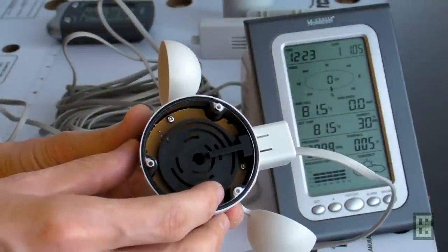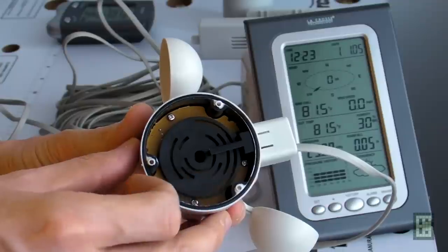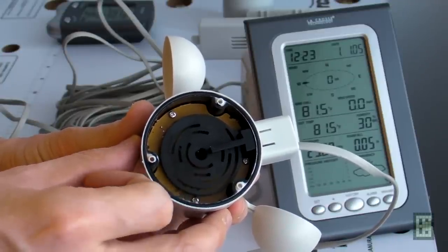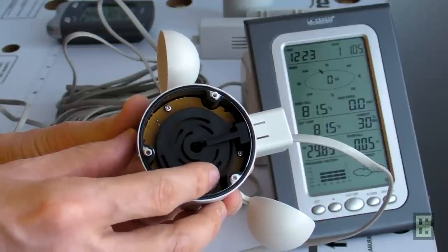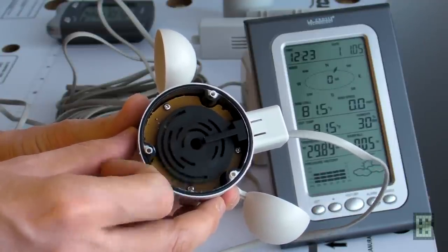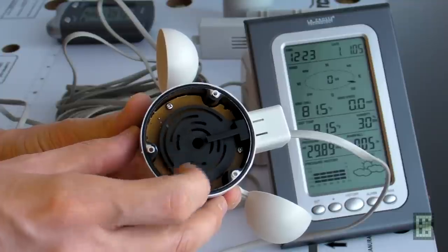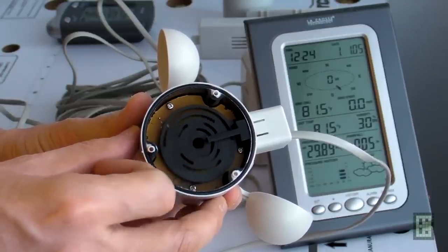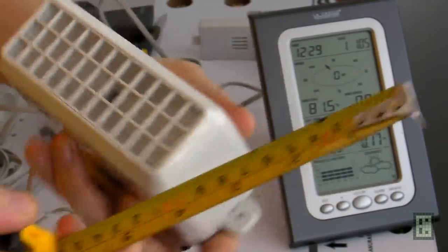And this wind direction is a bit more complex. There is a black disc that has four rows of slits, and depending on the position of the disc, you get 16 combinations using these four detectors. And these 16 combinations will give you the wind direction.